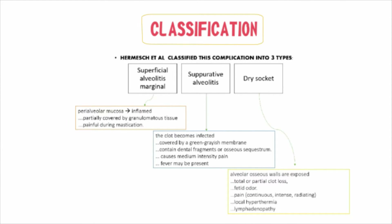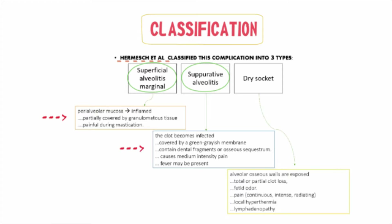Hermesh et al. in 1998 classified dry socket into three types. First, superficial alveolitis (marginal type): the mucosa covering the alveolar processes is inflamed with only partial granulation tissue, and the patient may complain of pain. Second, suppurative alveolitis: the clot is infected, covered by a gray-green membrane with bony fragments; pain and fever may be present. Third, classic dry socket: exposed bone, loss of clot, pain, fetid odor, and lymphadenopathy.